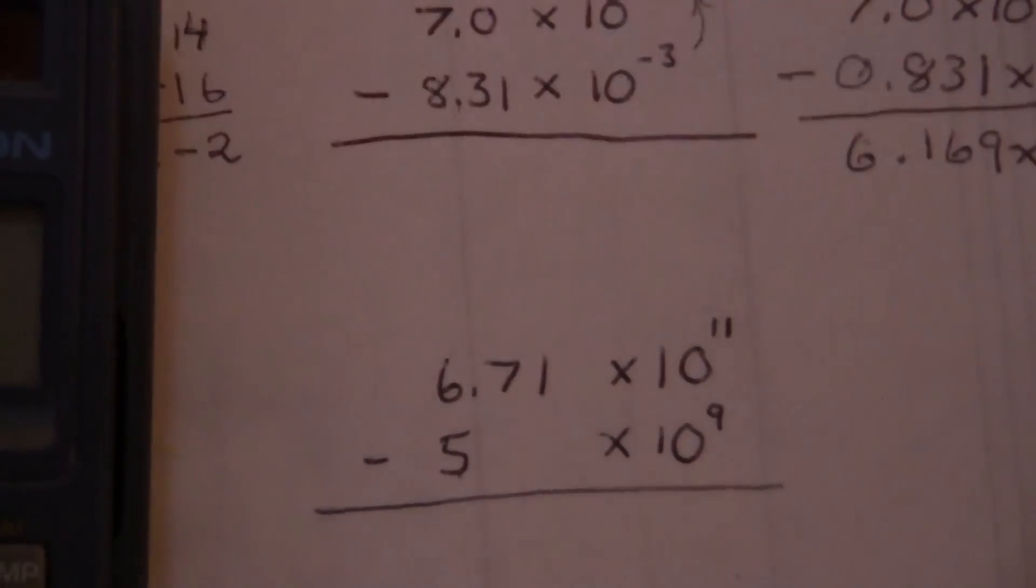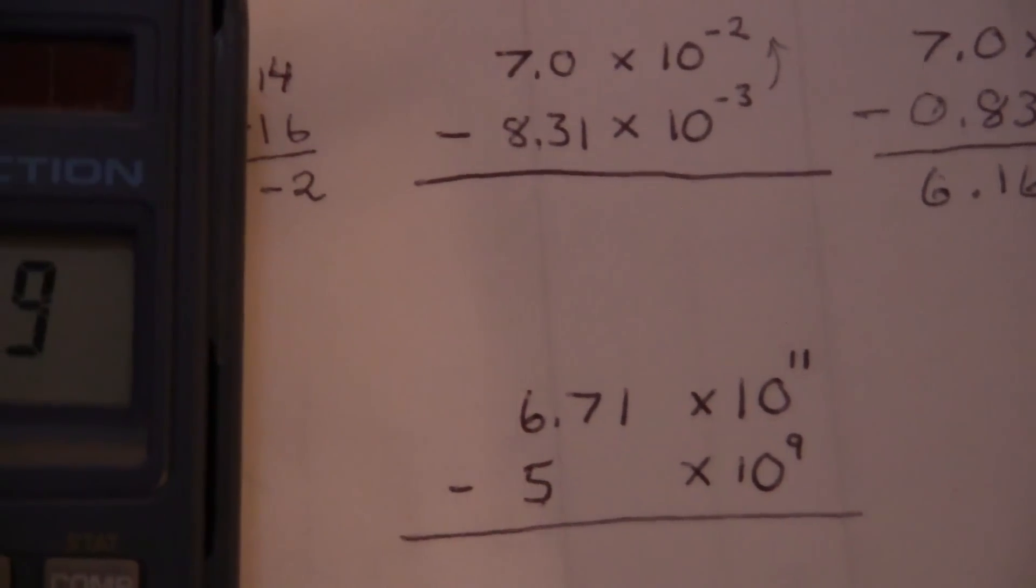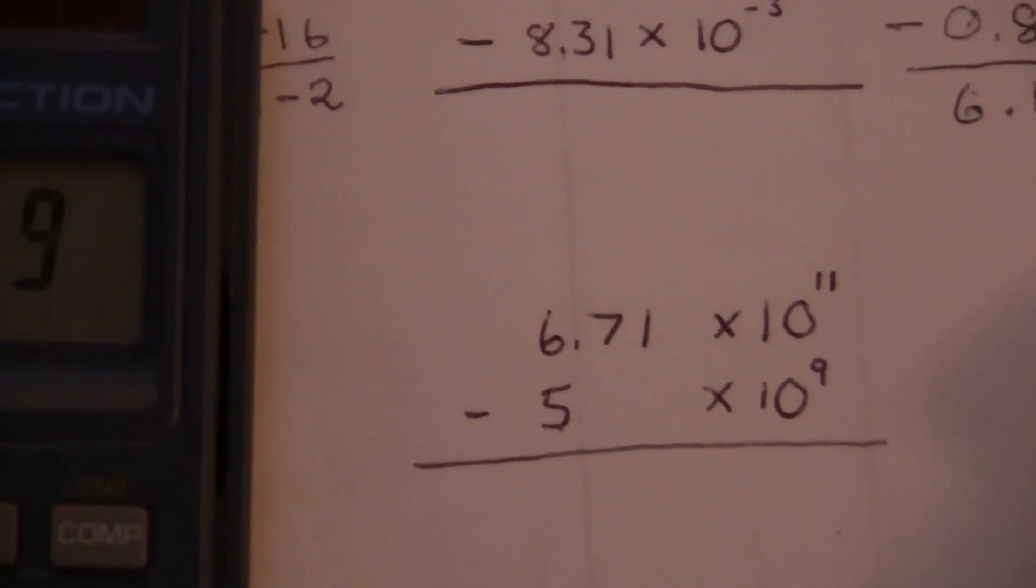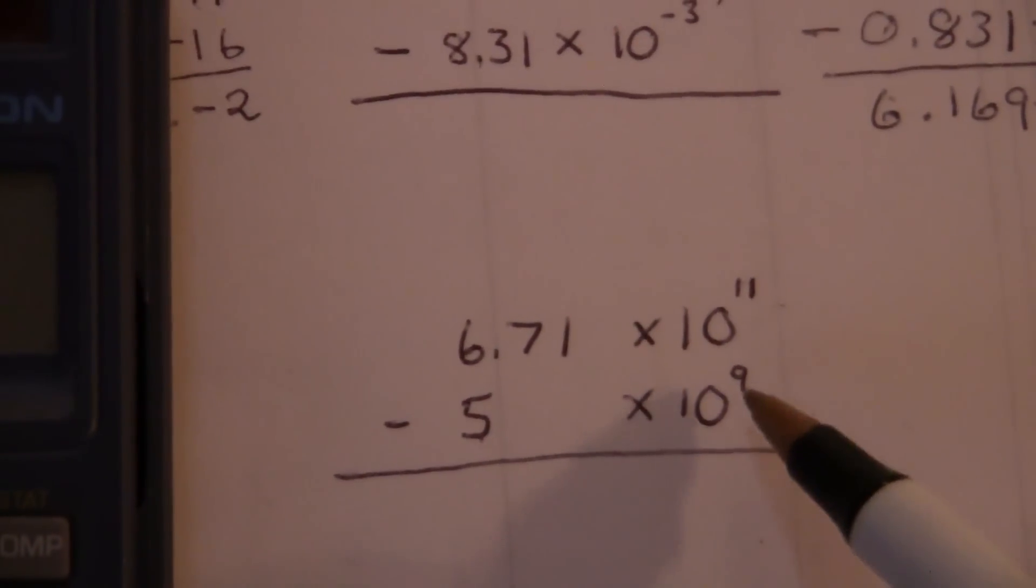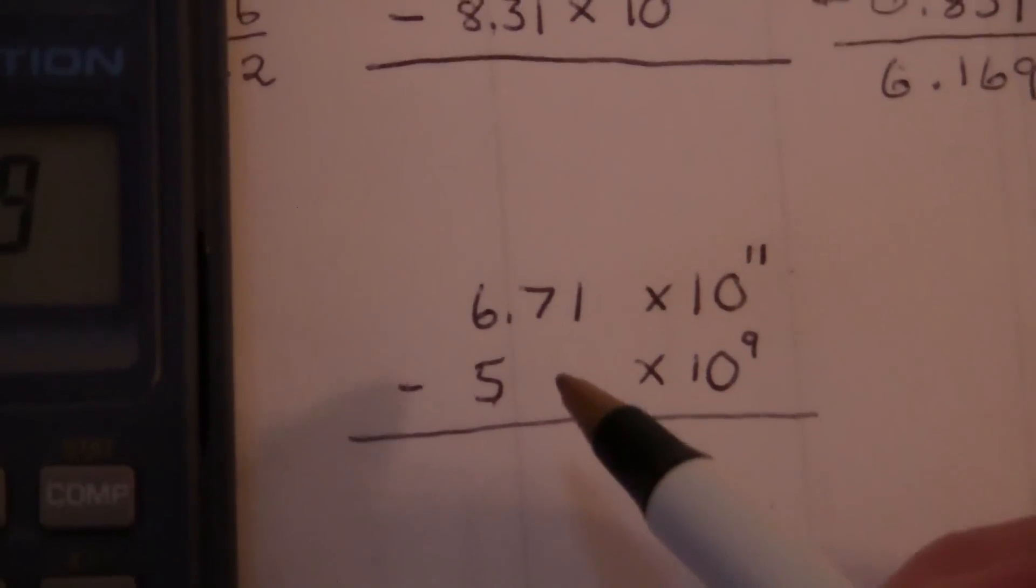Now, here we have 6.71 times 10 to the 11th minus 5 times 10 to the 9th. All right, so a little bit larger numbers. Same principle involved.